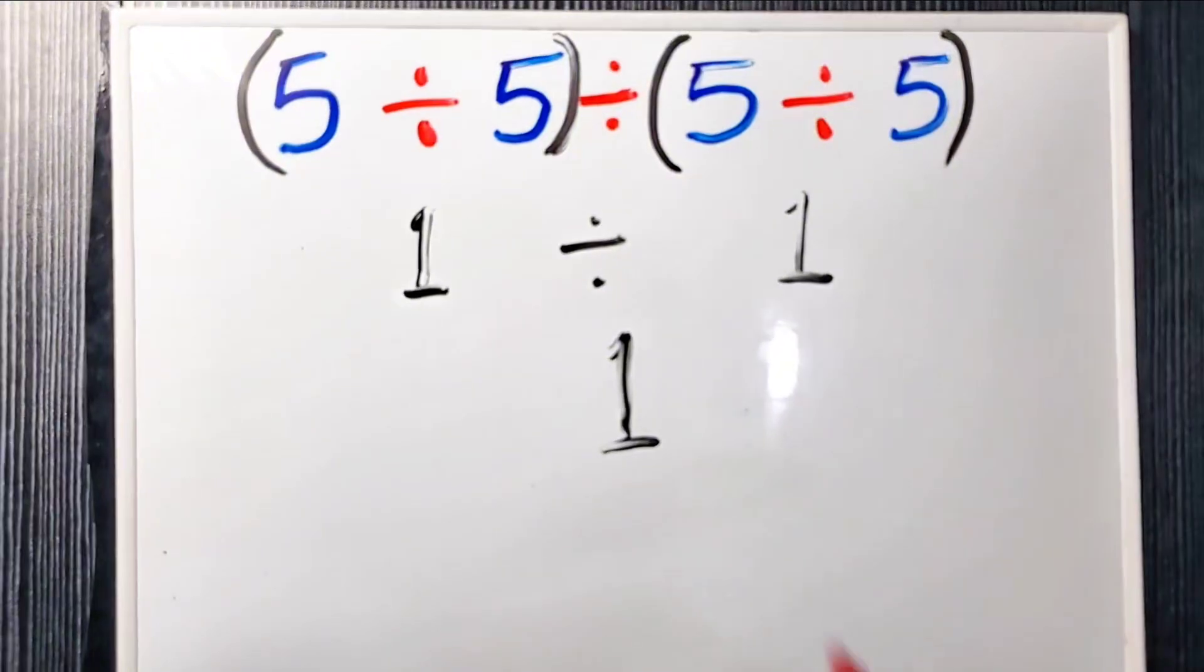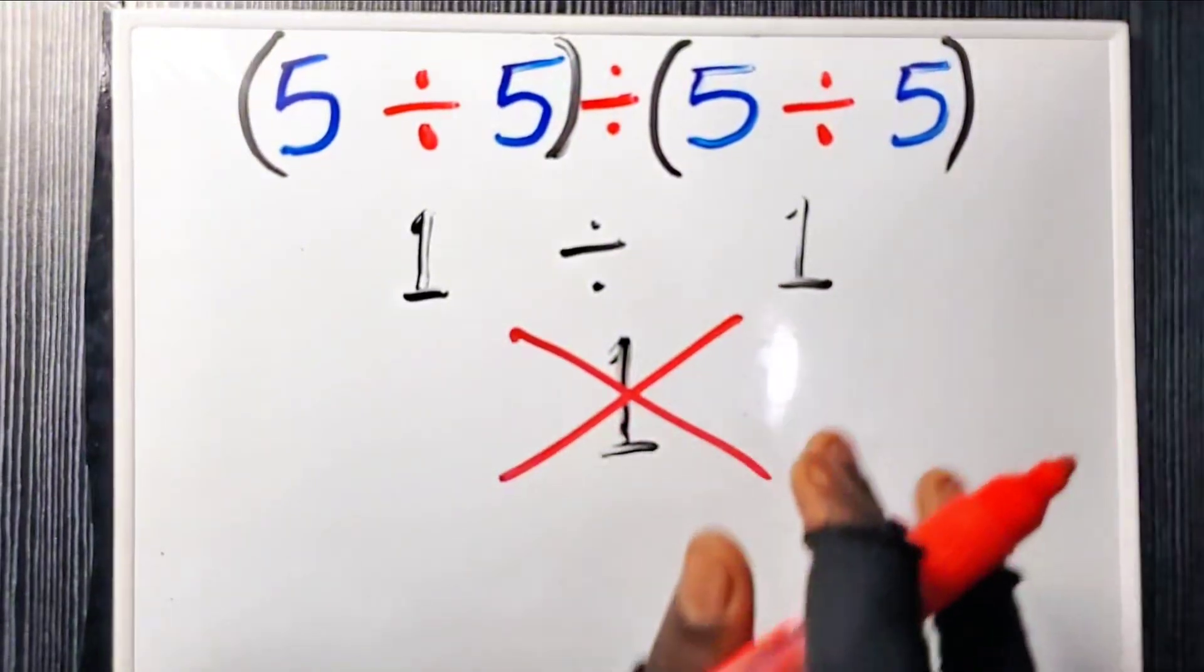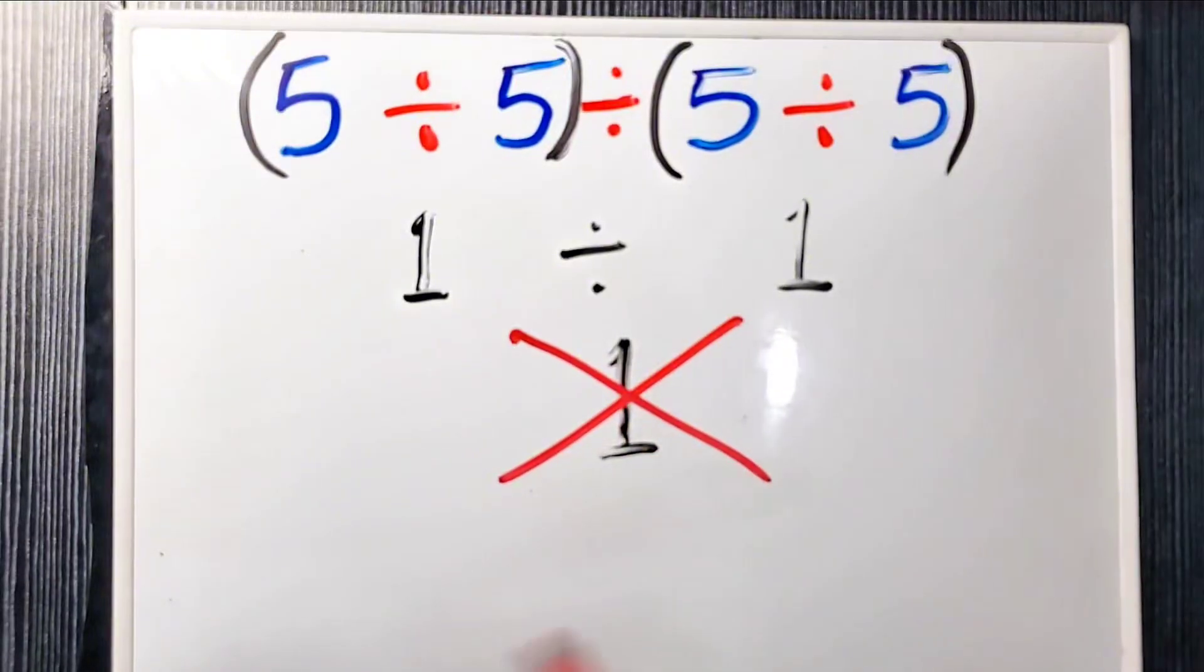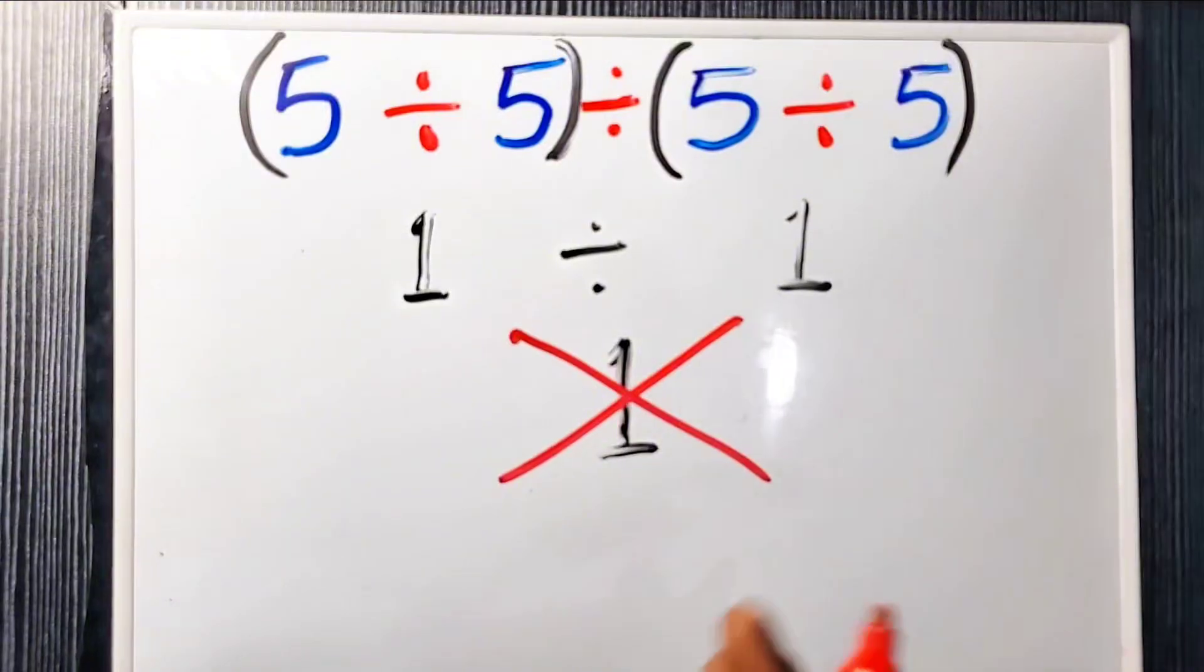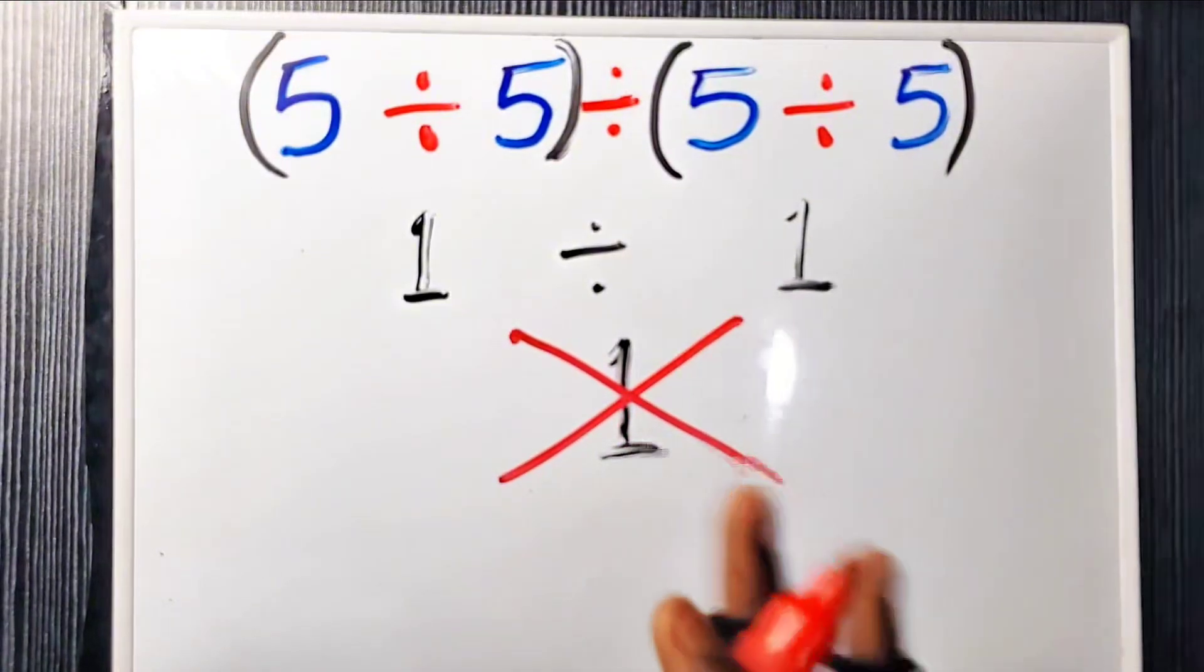This is wrong because you treated division like addition. In math, we'd say division is not associative. You cannot just group numbers wherever you like. Order matters.